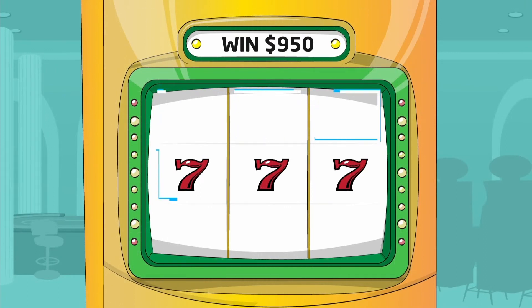Each symbol on each reel is assigned a number from 0 to 9, like this. Notice that the seventh symbol is at the third position on reel 1, at the seventh position on reel 2, and at the fifth position on reel 3.